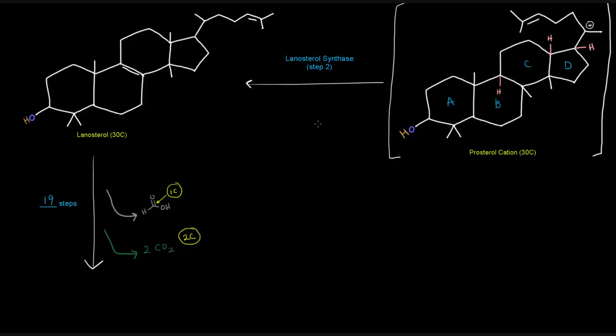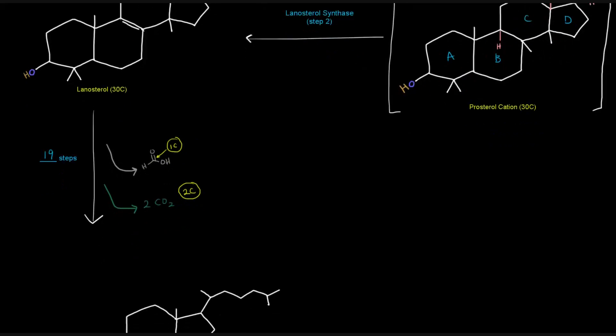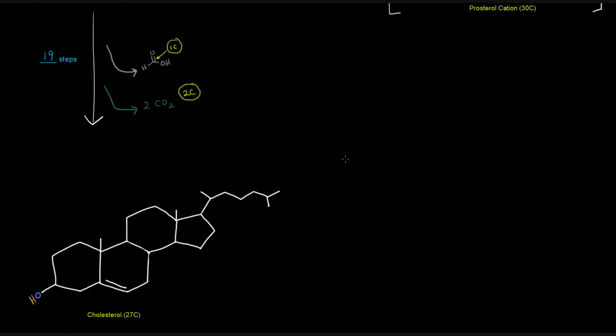So those three carbons come off of lanosterol. Well, maybe not lanosterol exactly, but three of the carbons that are in that molecule are going to leave to end up giving us cholesterol, which is our final product. Now, these 19 steps, I'm not exactly sure of the details. Most textbooks and really sources of information that I found end up just writing 19 steps that eventually give us cholesterol.